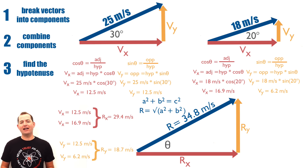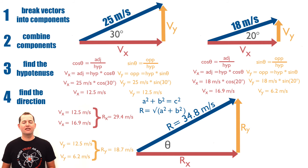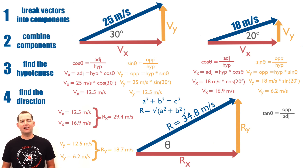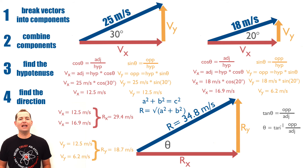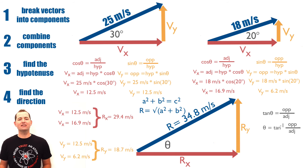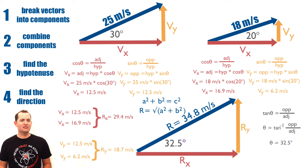Remember that every vector has a magnitude and a direction. The direction, or the angle, of our resultant vector can be determined using tangent properties. We know that the tangent of theta is equal to the opposite side divided by the adjacent side, so theta is equal to the inverse tangent of the opposite side divided by the adjacent side — or the inverse tangent of our y component divided by our x component. This gives us our resultant vector's angle, so we now know its magnitude and its direction.